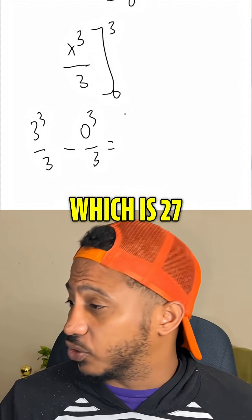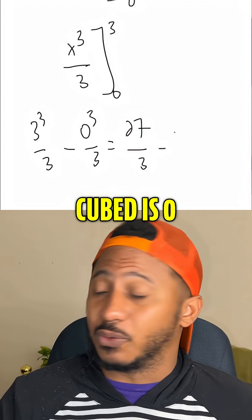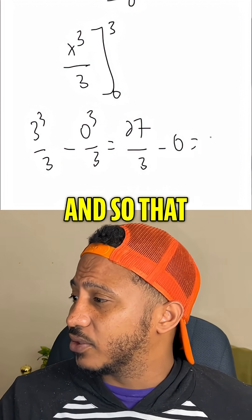And so that simplifies to just 3 cubed, which is 27, over 3 minus 0 cubed is 0, divided by 3, which is 0. And so that gives us just 9.